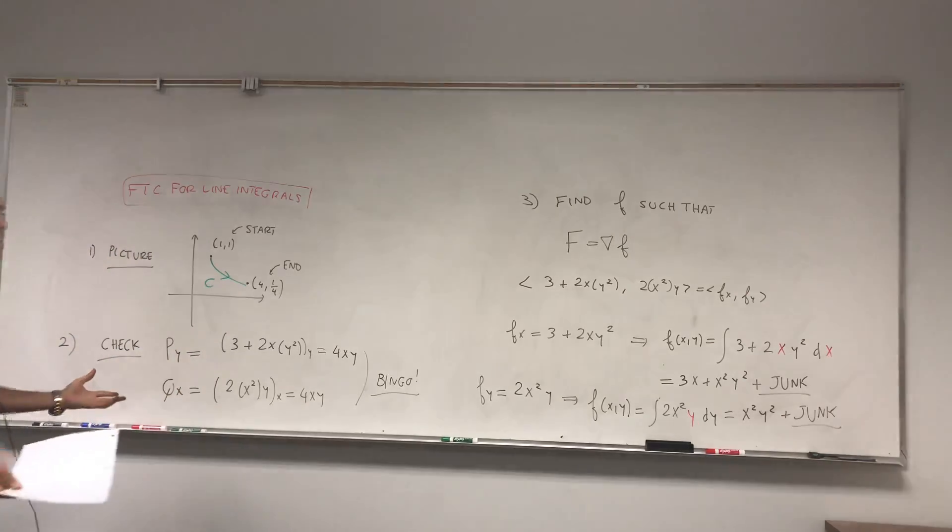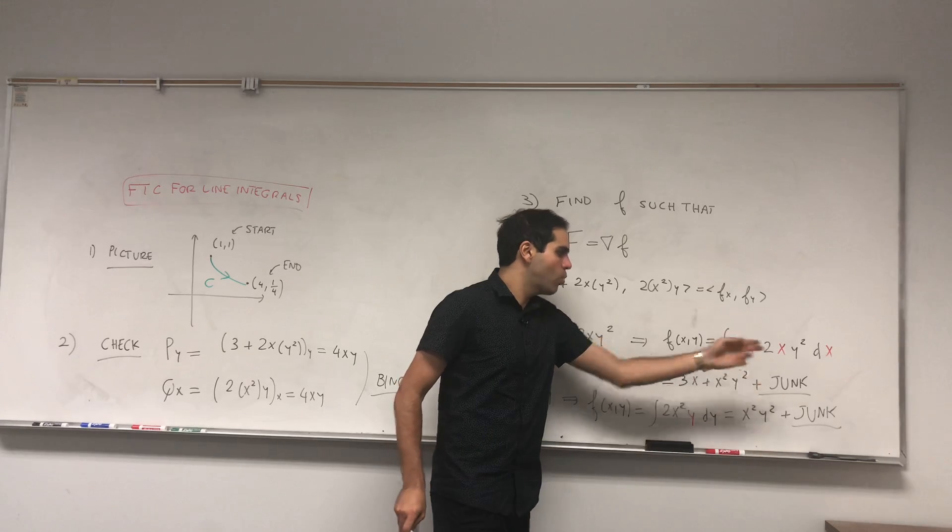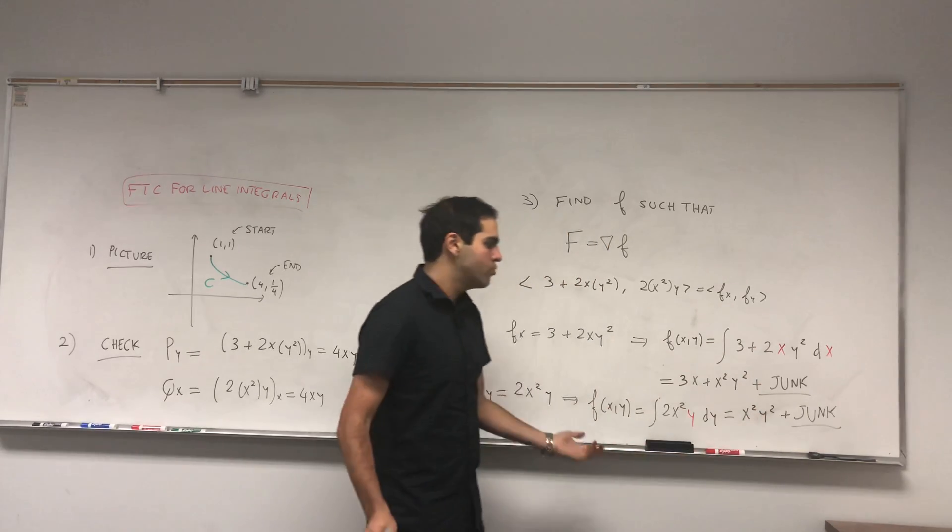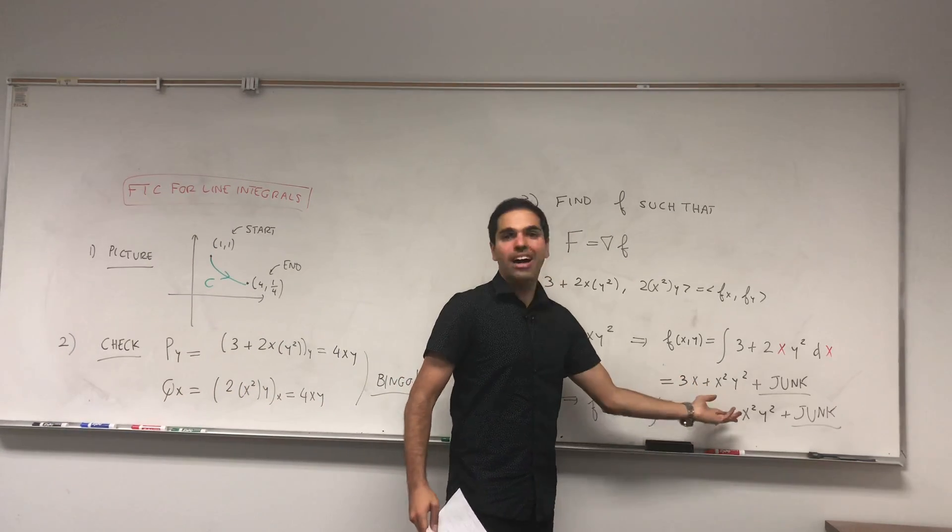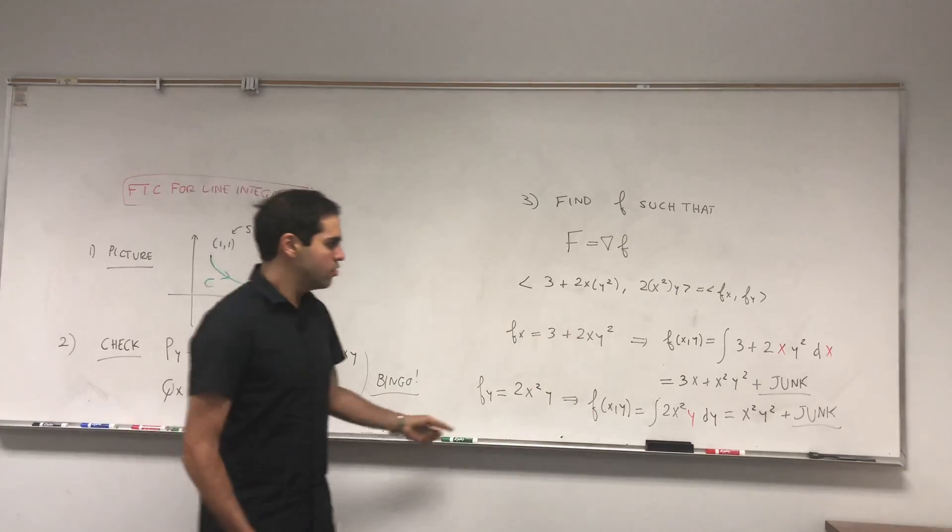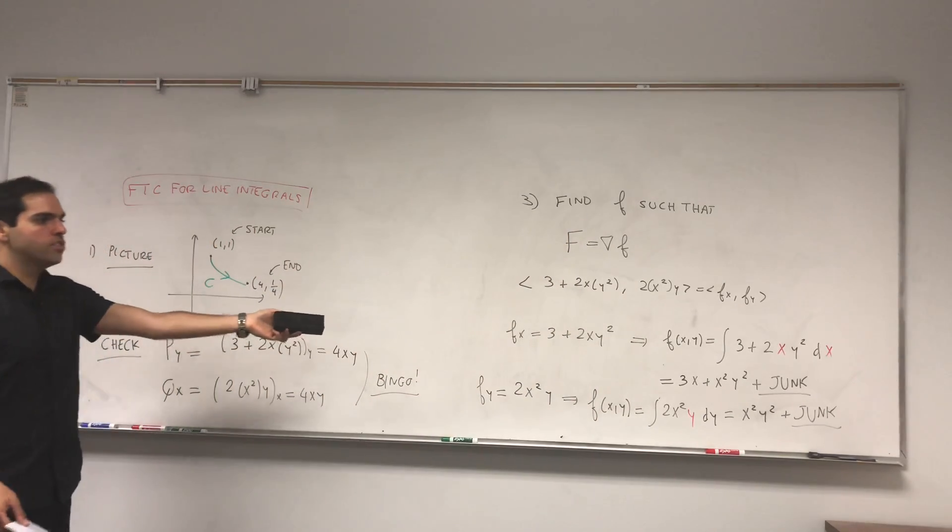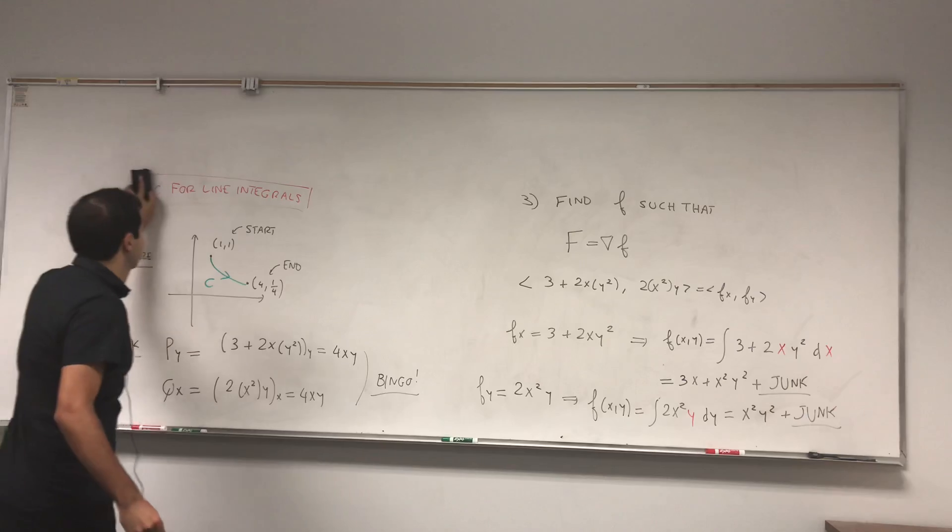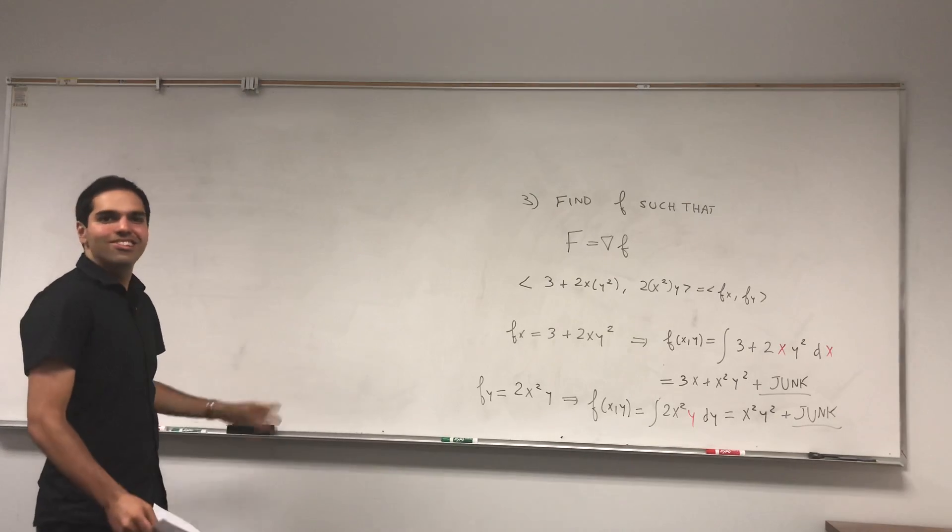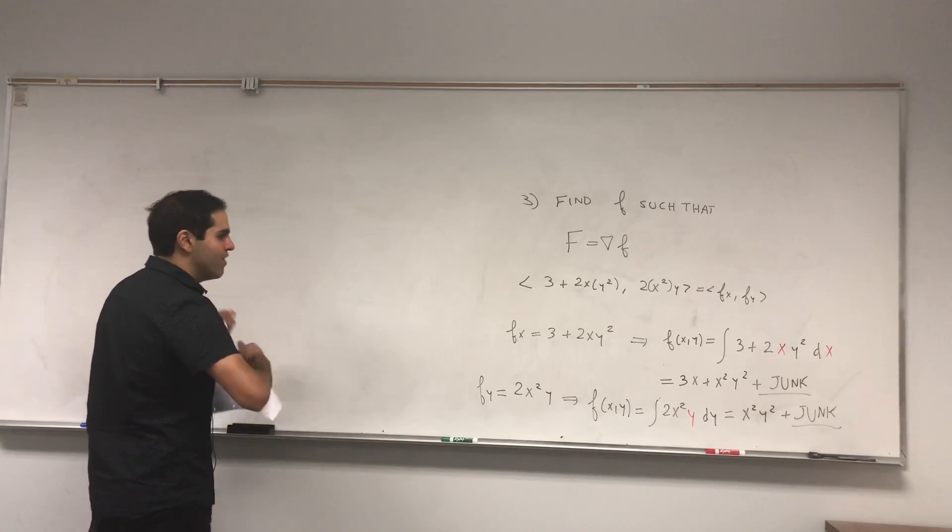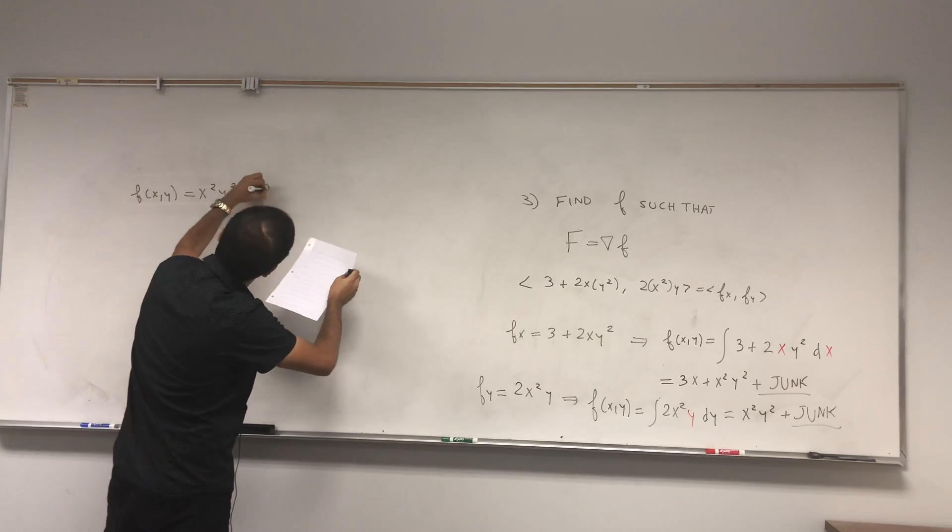And so the question is, what is f? Well, on the one hand f is 3x plus x squared y squared plus some junk, but also f is x squared y squared plus some junk. And the idea is just you just combine those two but don't double count. Because notice x squared y squared appears twice, so you just count it once. So f in this case is really x squared y squared plus 3x. And by the way, this technique totally works also for three functions and for three variables.